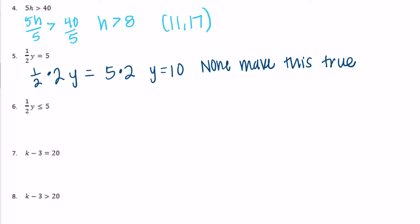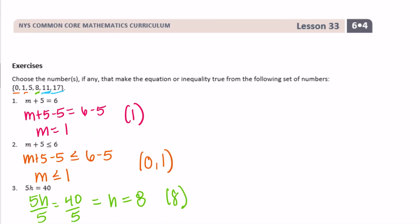Exercise 6: one half y is greater than or equal to 5. Multiplying both sides by 2: y must be greater than or equal to 10. Wait — finding anything less than or equal to 10 from our set: 0, 1, 5, and 8.